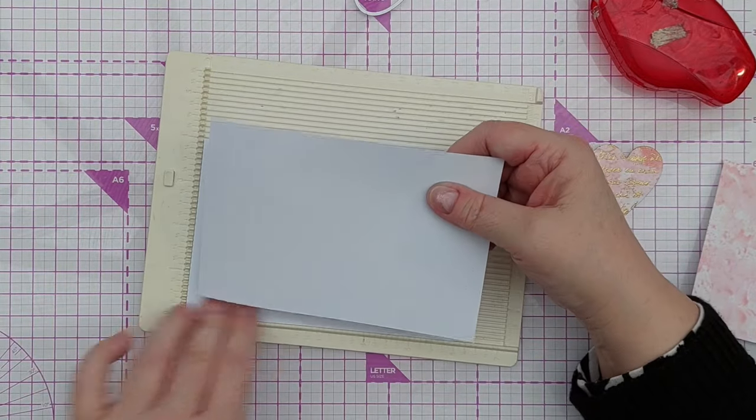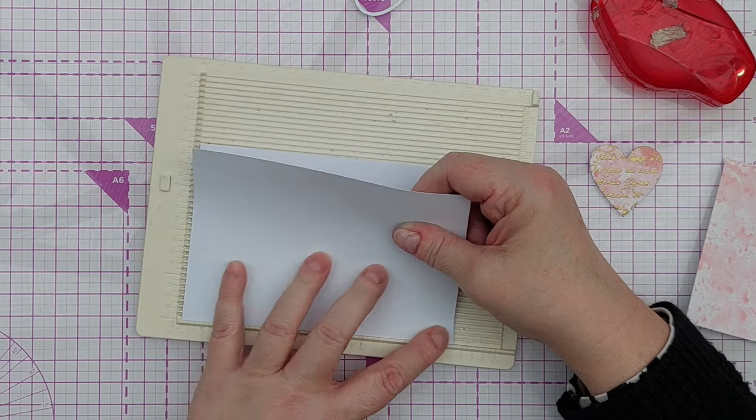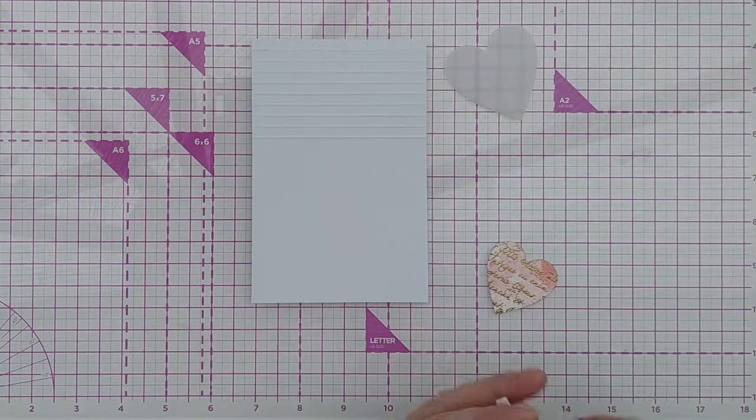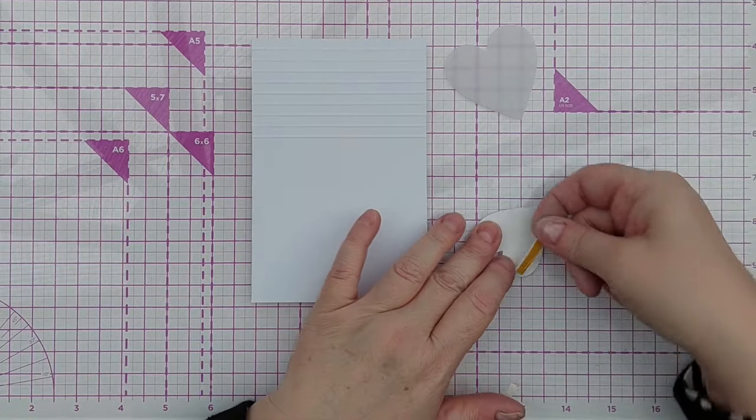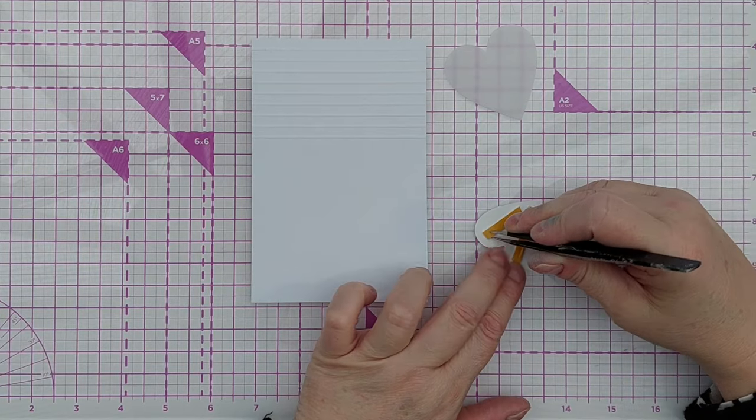I wanted it to be a completely flat panel. Next, I added some foam tape to the back of my heart and then stuck the heart onto a slightly larger heart that I'd cut from vellum to give it something behind it.